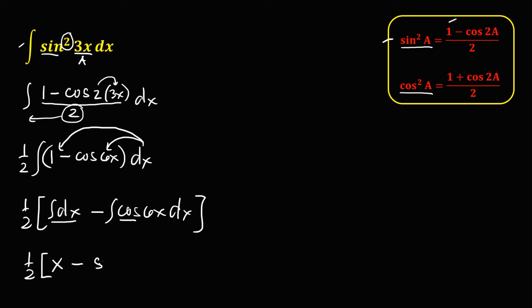6x, then over the derivative of 6x, that's 6, then plus c. Then simplify, so distribute this 1 half, so we have 1 half x, then to this term, 2 times 6, that's 12. So minus 1 over 12, sine 6x plus c.